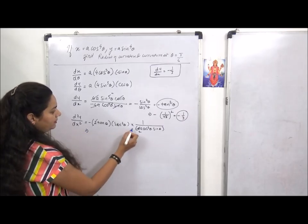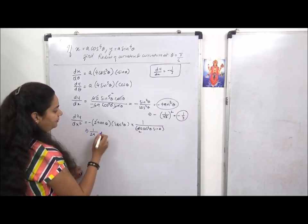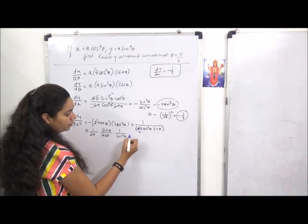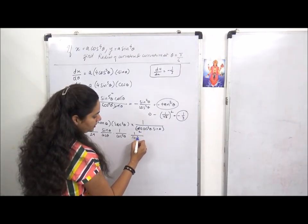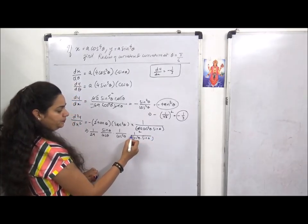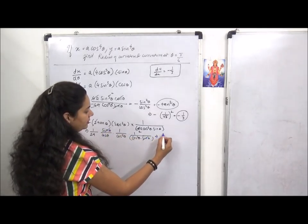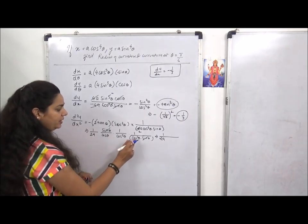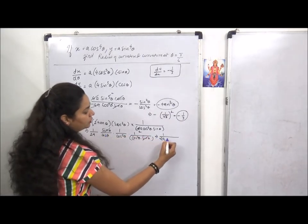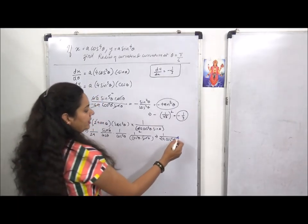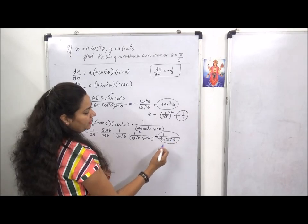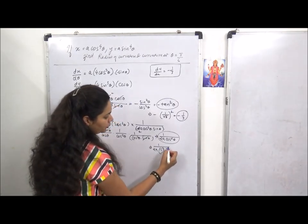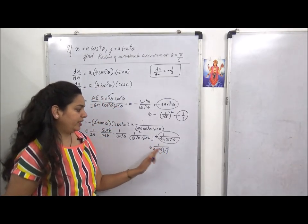For parametric function second order differentiation, we take the derivative of dy by dx which is minus 2 tan theta times sec square theta. But for parametric functions specifically, we must write 1 upon dx/dθ in the denominator. Always in second order differentiation for parametric functions. So minus minus cancels, 2 times 4 is 8, giving 1 upon 2a. I can write tan as sin theta upon cos theta and sec as 1 upon cos square theta.